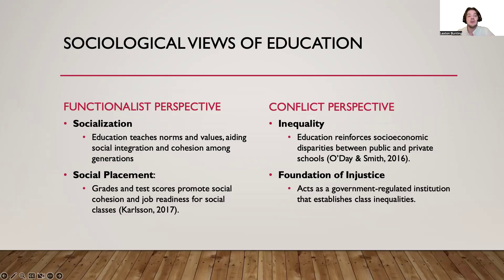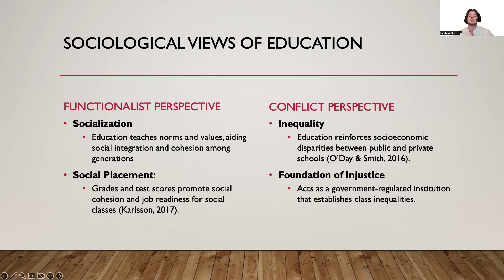Going into the sociological views of education from both a functionalist and conflict perspective: a sociologist from a functionalist perspective would view the social institution of education as one of the first organizations of socialization. Educational environments serve as a learning ground for students to adapt to social norms, values, gestures, and traditions. Education also serves as a system for social placement within society through grades, test scores, and extracurricular activities to promote social cohesion and job placement.